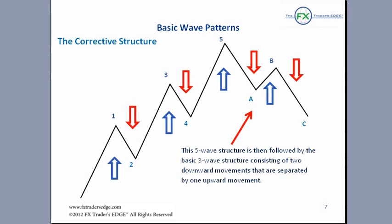The corrective structure consists of two downward movements separated by one upward movement. This corrective structure is called a zigzag. It also looks like a flag pattern in classical technical analysis. But not all corrections are created equal, which you'll learn in video number three. For the remainder of this video, we're going to treat the corrections as zigzag — this ABC structure.